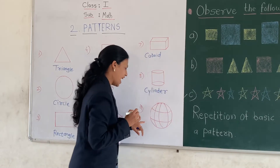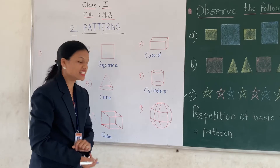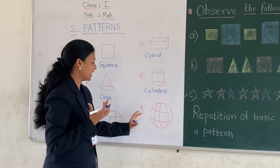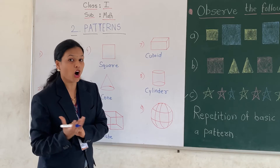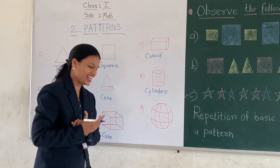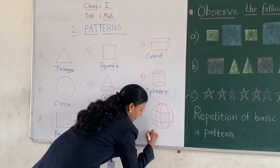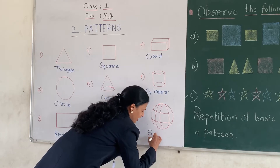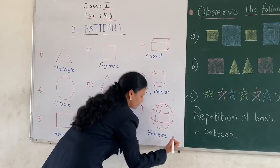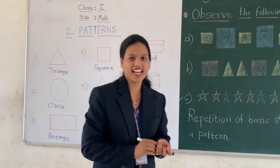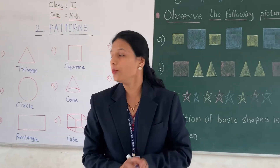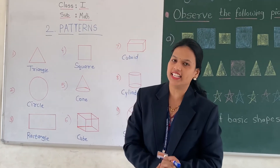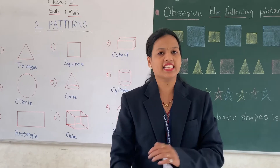And the last one is the ninth one. We are taking the example of a ball. Very good. This shape is a sphere. Very good. You all are good. So these shapes we have already learnt in our last lesson.